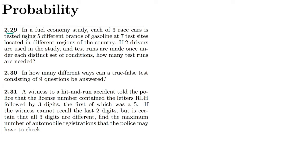Question 2.29: In a fuel economy study, each of three race cars is tested using five different brands of gasoline at seven test sites located in different regions of the country. If two drivers are used in the study and test runs are made once under each distinct type of combination, how many test runs are needed?